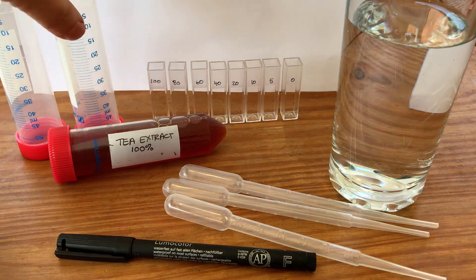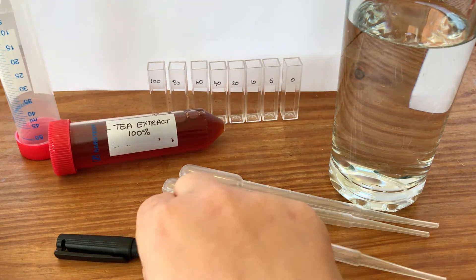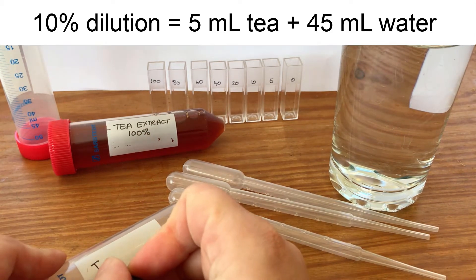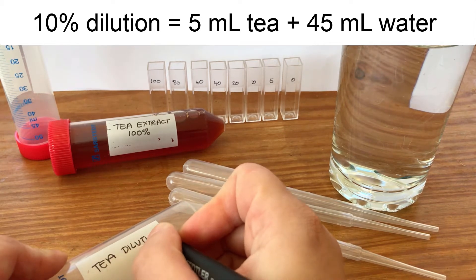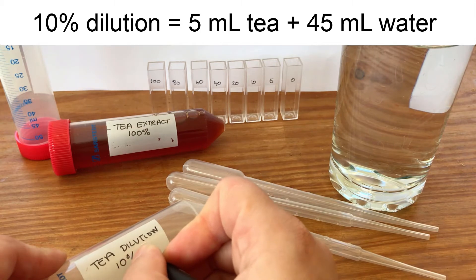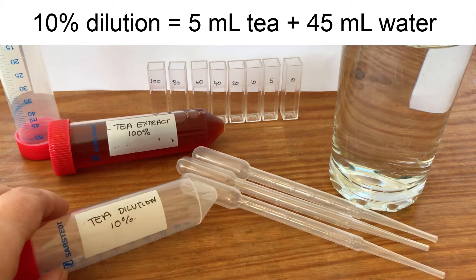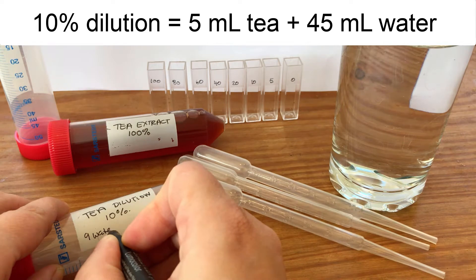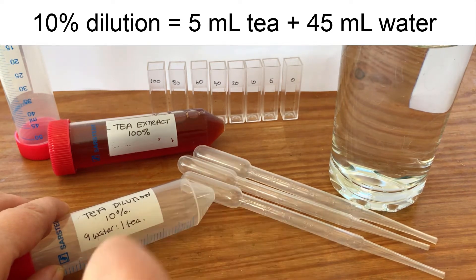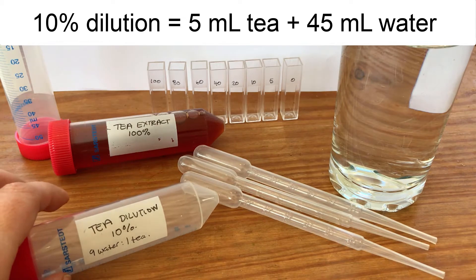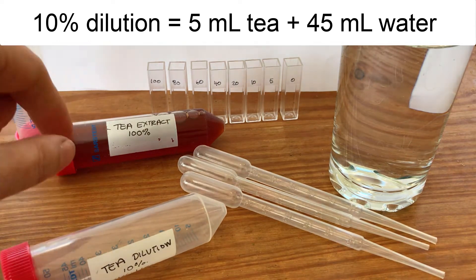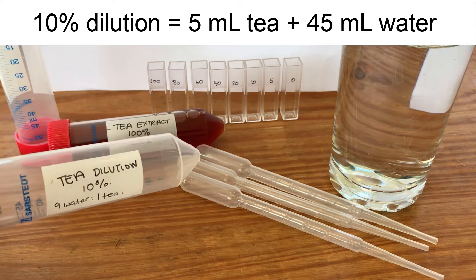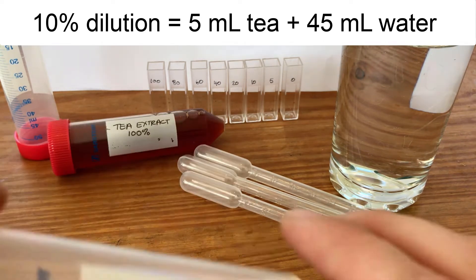So just let that tea cool. Before I make up my smaller dilutions I'm also going to make up a tube of 10% tea dilution. 10% dilution means we've got nine parts water to one part tea. In this 50 ml tube I'm going to put 5 ml of the tea extract in and then dilute that with 45 ml of water to get 50 ml of 10% diluted tea.